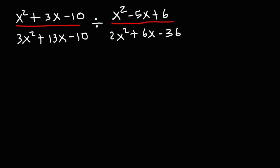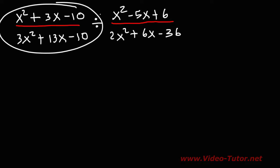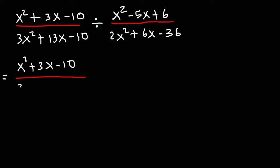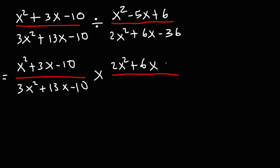Now let's move on to our next problem — dividing two rational expressions. Perhaps you've heard of a phrase called keep, change, flip. It allows us to change from a division problem to a multiplication problem. So what we're going to do is keep the first fraction, change the sign from division to multiplication, and flip the second fraction. So we have x squared plus 3x minus 10 divided by 3x squared plus 13x minus 10, times the flipped second fraction. So now we have a problem similar to the last one — we need to factor and cancel.